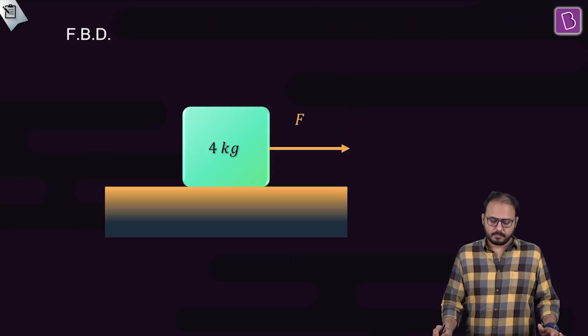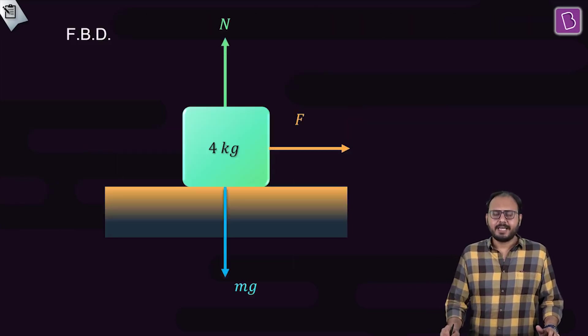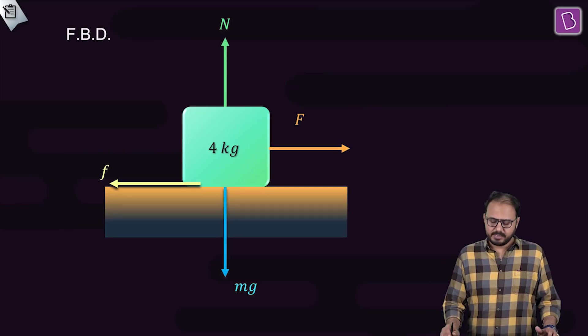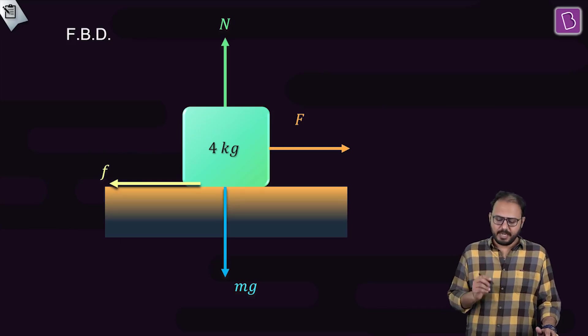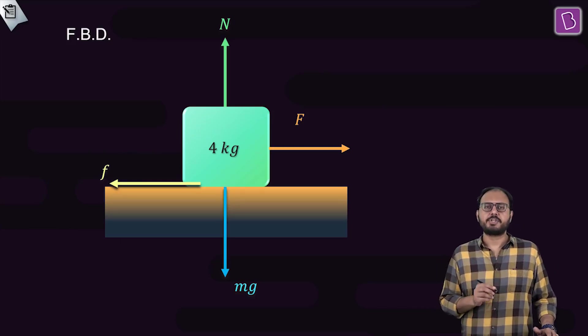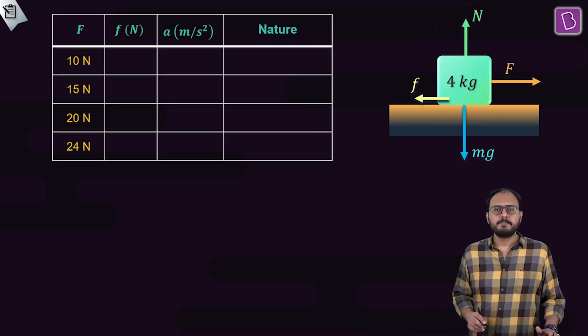Question clear? Free body diagram. The free body diagram is mg down, normal up, external right, friction left. mg down, normal up, external right, friction left. Sorted?